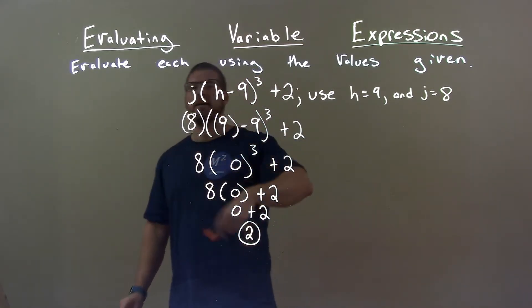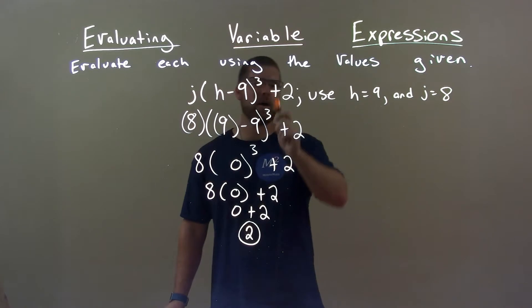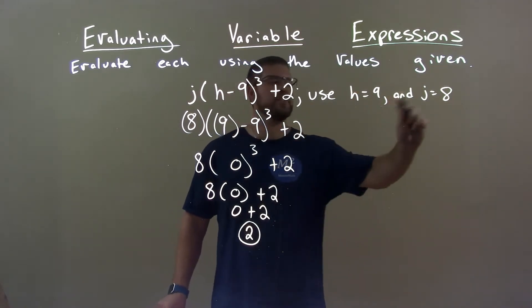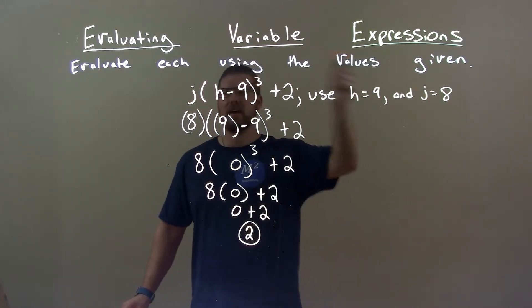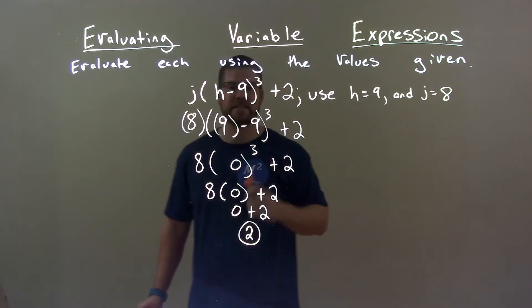Quick recap. j times h minus 9 to the third power plus 2. Use h equals 9 and j equals 8. First step, h for 9, plug that in. Then j for 8, plug that in. Then we simplify.